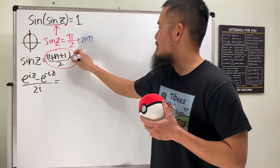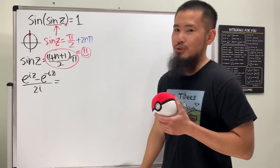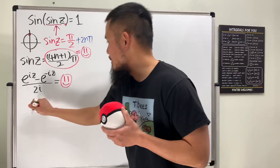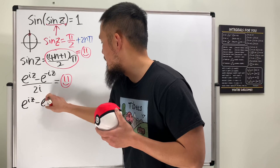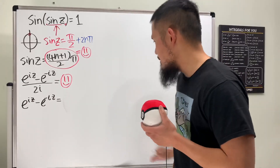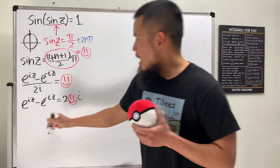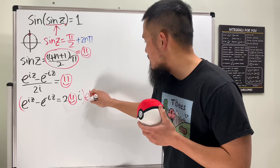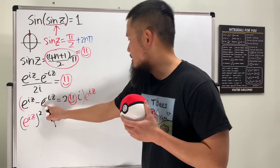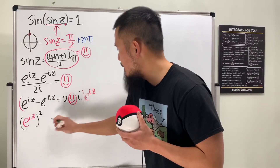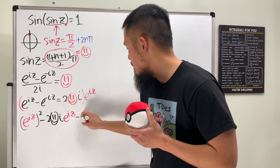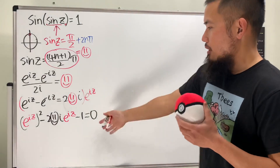Multiplying everything by e^(iz), we get (e^(iz))² minus one, minus 2·happy_face·i·e^(iz), minus one equals zero. Now we have a quadratic equation in terms of e^(iz).